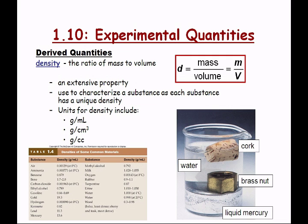There are a few different types of density units. The two we'll be using in this class are grams per milliliter — used for liquid density, since liquids are usually measured in milliliters — and grams per cubic centimeter, which is used when talking about solids, since solids are more easily measured with a length-measuring device.